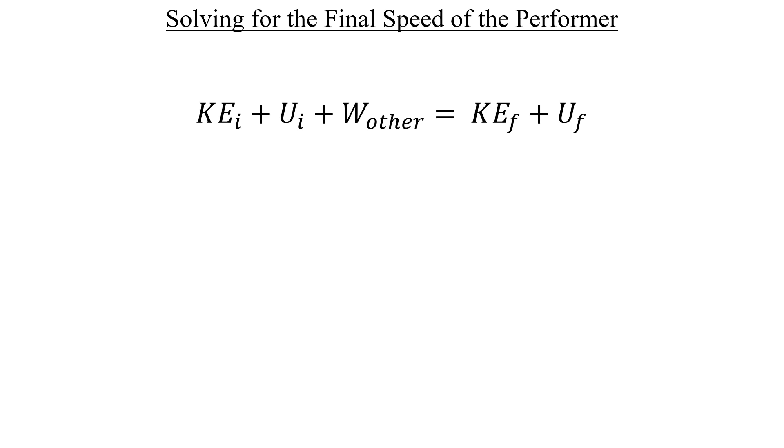We know that as this guy is sitting inside the cannon waiting to be launched, he isn't moving. Therefore, the initial kinetic energy is equal to zero. Since we set the initial height to zero, we don't have to worry about the potential energy of his position.